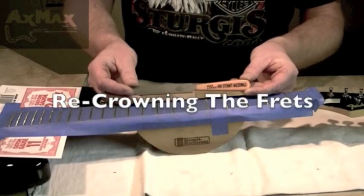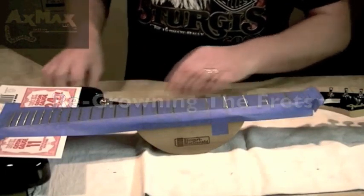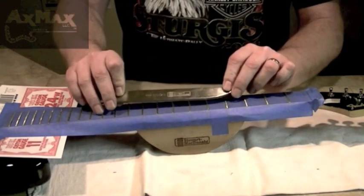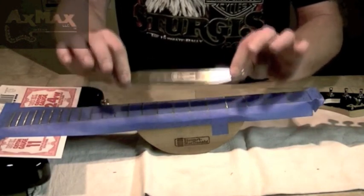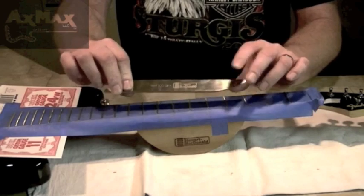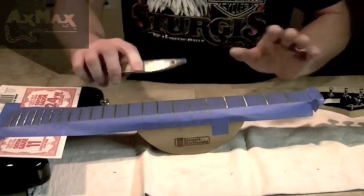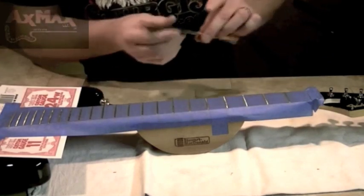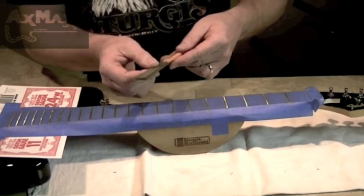Alright, got my fret files. This is my straight file and then the little bit more expensive Stumac curved file. I would recommend spending the extra dough and getting this one because it's fabulous for getting up top. But I do want to show you both techniques, okay?